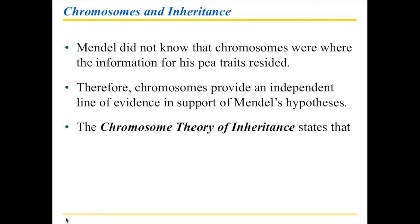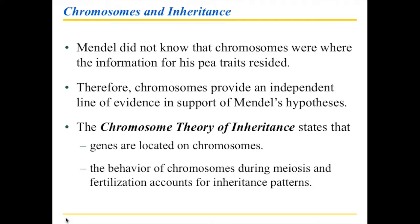All of this came down, ultimately, to the chromosome theory of inheritance, which states that genes are located on chromosomes. Mendel knew about pieces of information, which jives with his hypotheses. But the behavior of chromosomes during meiosis — that is something he had no idea about. And not only the behavior of chromosomes during meiosis, but also what happens when fertilization occurs. Those were key concepts he was missing in trying to come up with an explanation for the patterns he observed.